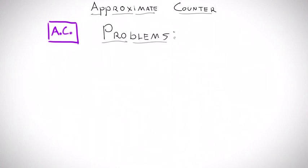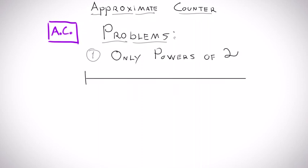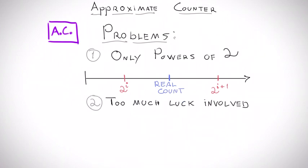We now have our approximate counter, this purple box, to estimate the number of unique strings using very little memory. But this algorithm has two drawbacks. It only estimates powers of 2. Since powers of 2 get far really fast, it is very likely that the true value we want to estimate will not be a power of 2.